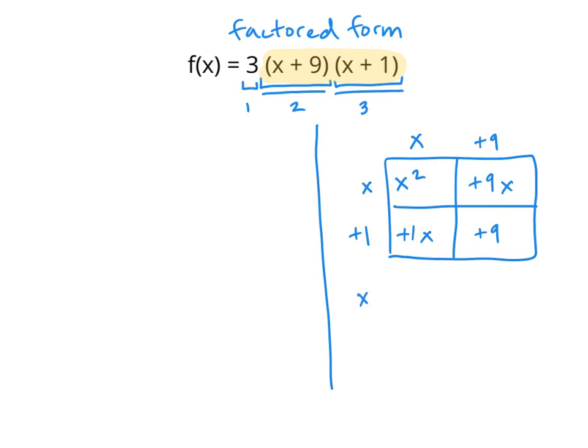This leaves me with x squared plus positive 9x plus 1x plus 9. I can simplify this further by combining like terms, which gives me x squared plus 10x plus 9.